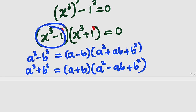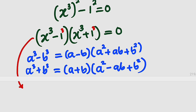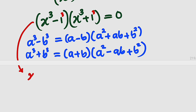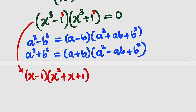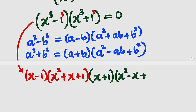Let me take the first factor, for which a is x and b is 1. So we have x minus 1, multiplied by x squared plus x times 1 which is x, then 1 squared which is 1. Then the second factor, switching color: x plus 1, multiplied by x squared minus x times 1 which is x, then plus 1 squared which is 1. All of this equal to 0.